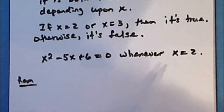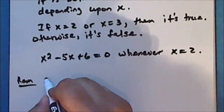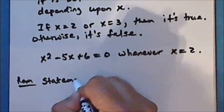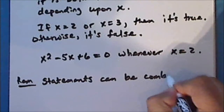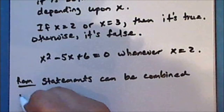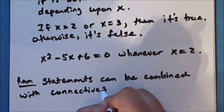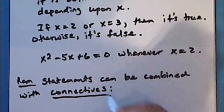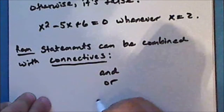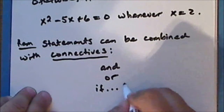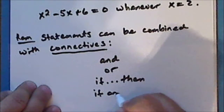Just as sentences can be combined with connectives, two statements can be combined with connectives. Some of the more common ones are: and, or, if-then, and if and only if.